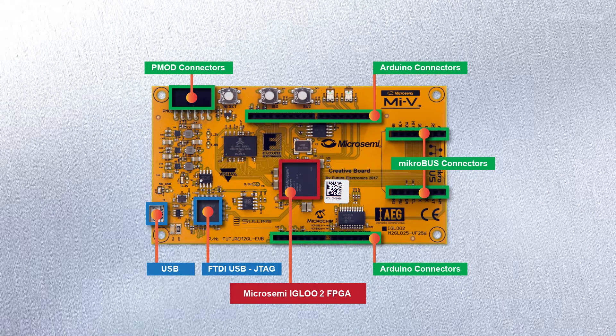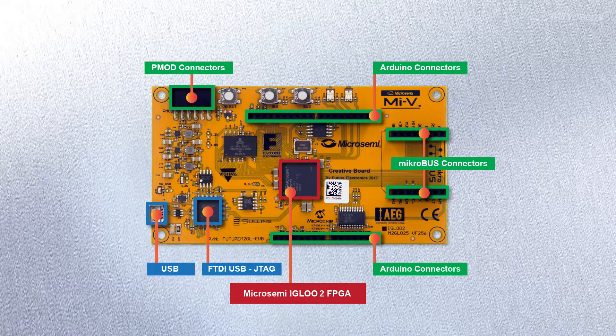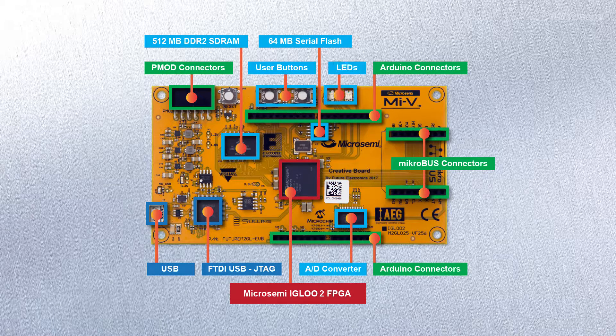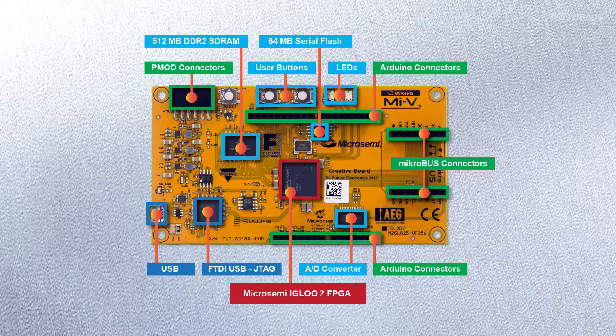These industry standard interface connections provide access to a breadth of third-party add-on cards. There are 64 megabits of serial flash, DDR2 SDRAM, 6-channel synchronous A-to-D, embedded Flash Pro 5, a couple of user buttons, and LEDs. The Mi5 RISC-V based Creative Development Board is an ideal starting point to kick off your own RISC-V based design and leverage the MicroSemi-developed soft RISC-V CPU cores available now on GitHub for our RTG4, PolarFire, and Igloo 2 FPGA families.